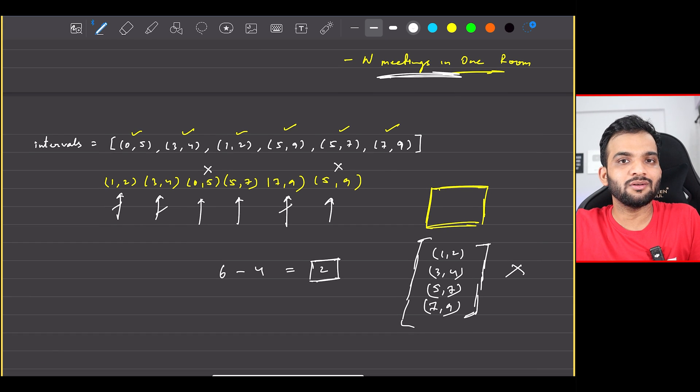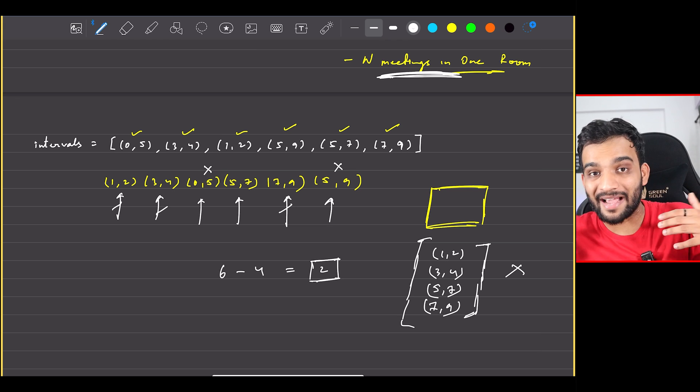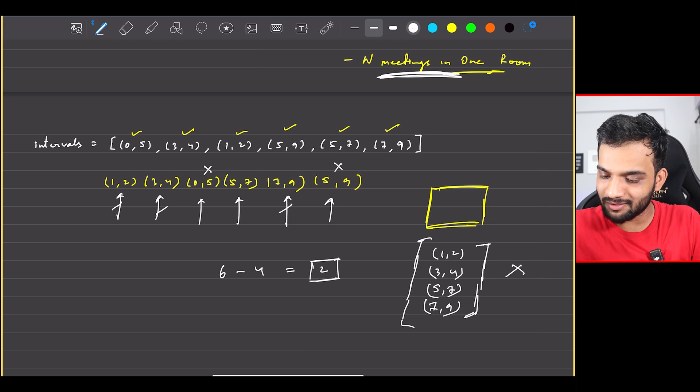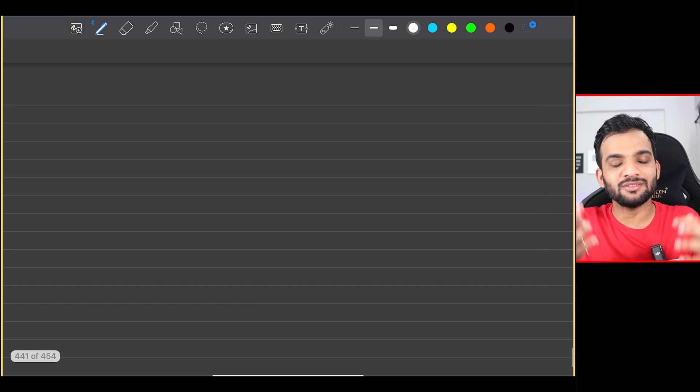Yeah, it's the same problem as I said, inverse. You figure out the maximum intervals that you can have together, so whatever is the max number and whatever is the left out, the left out is your answer. Done and dusted. Super simple, the same question, just the inverse. Can I write down the code? I think I can.